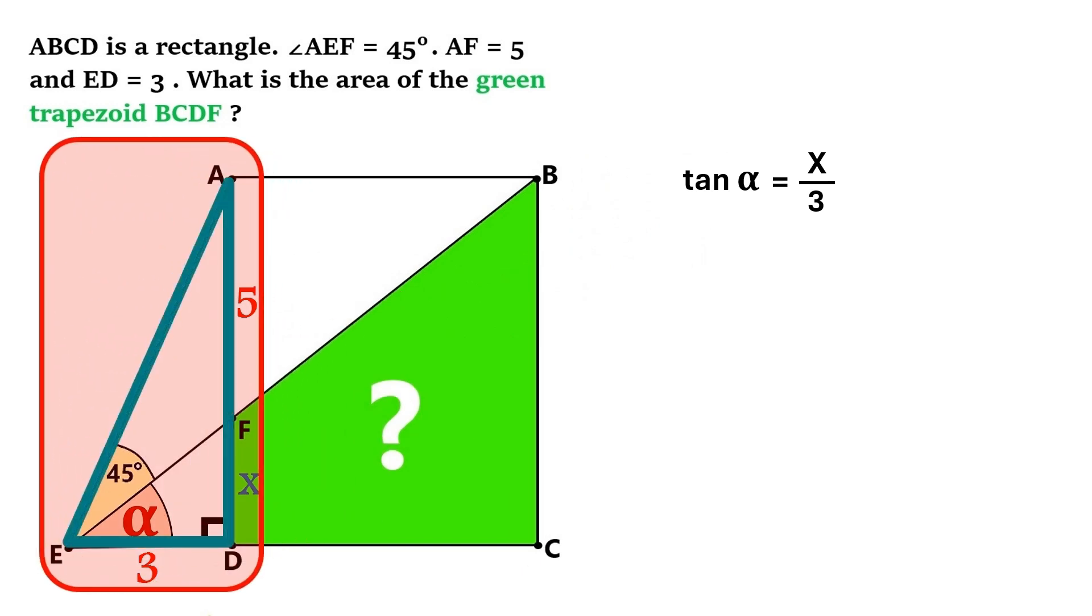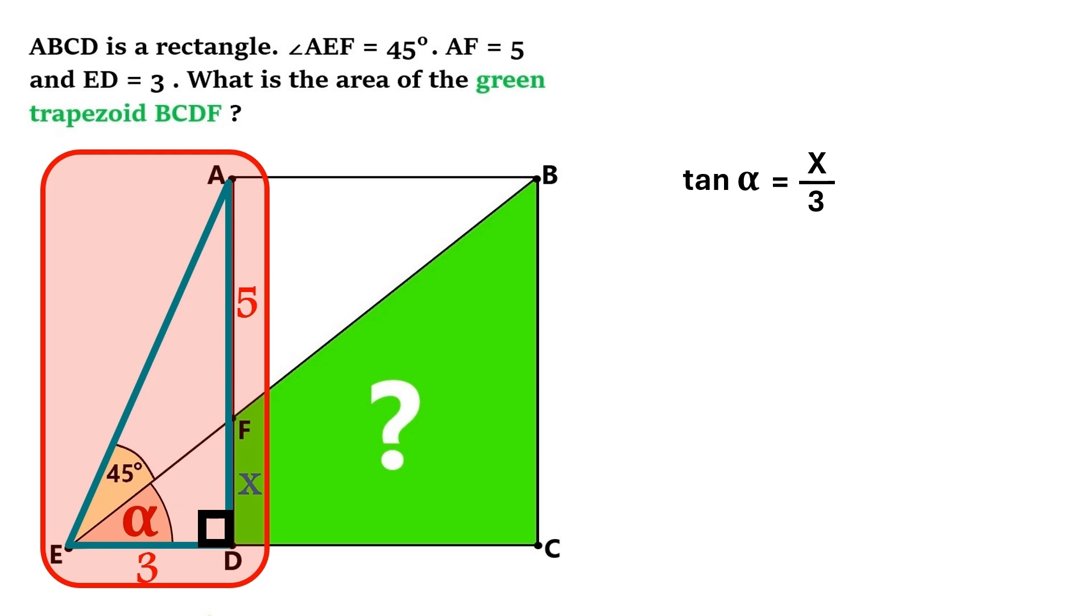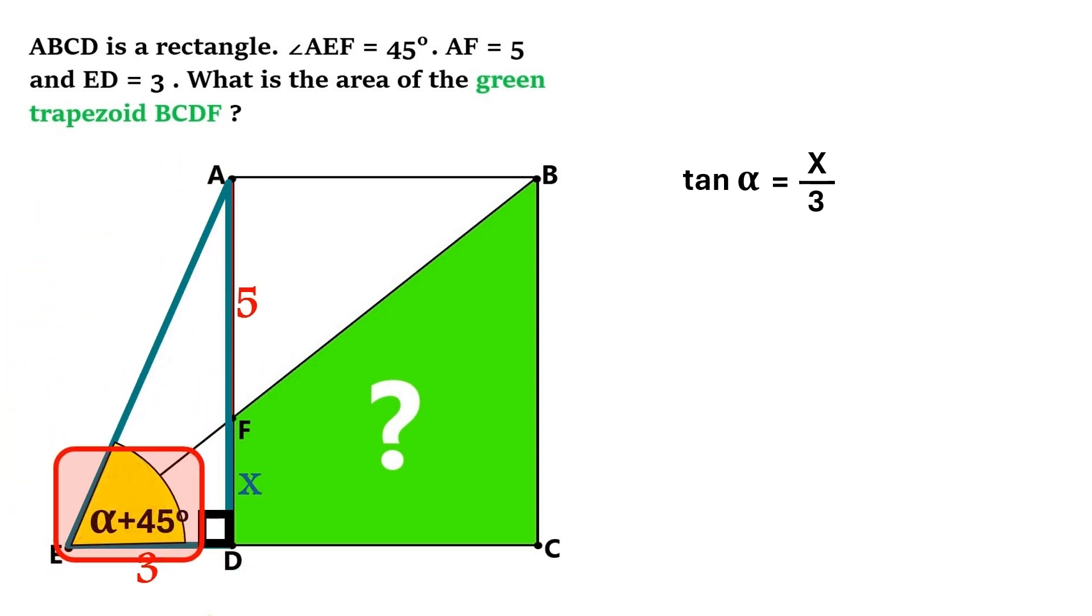Now we've got another triangle EAD here. And this one's a right triangle too. And this entire angle at its vertex adds up to alpha plus 45 degrees. And we can take these two sides and combine them into this fraction. And that will give us tangent alpha plus 45.